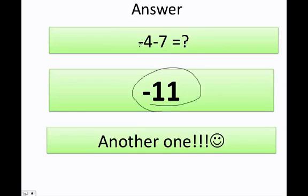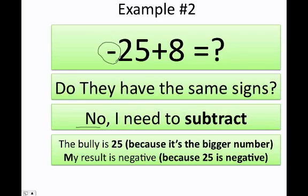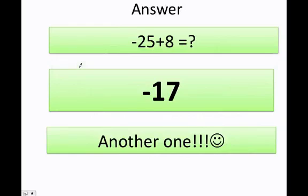Remember: equal signs, I'm going to add; different signs, I'm going to subtract. Negative 25 plus 8 — do they have the same sign? The answer is no, so I need to subtract. Who's the bully? In this case it's 25. Therefore my answer is going to be negative, and negative 25 plus 8 is equal to negative 17.